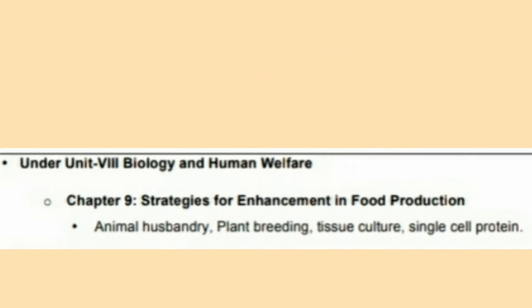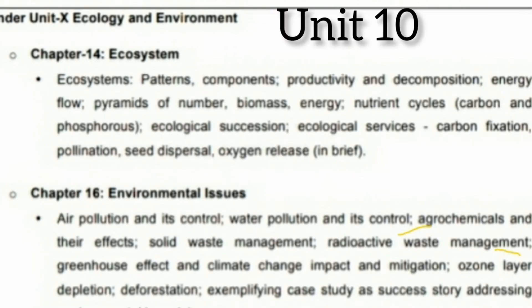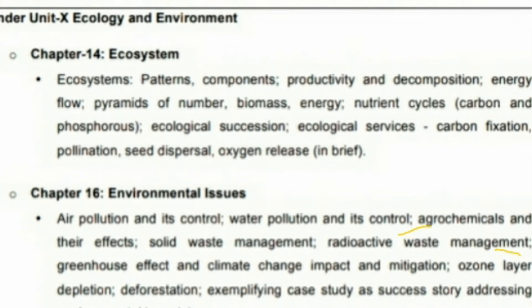Finally, under unit ten, ecology and environment, chapter fourteen on ecosystems: ecosystem patterns and components, productivity, energy flow, pyramid of numbers, biomass energy, and various biogeochemical cycles including the carbon cycle, phosphorus cycle, and nutrient cycles are all eliminated.